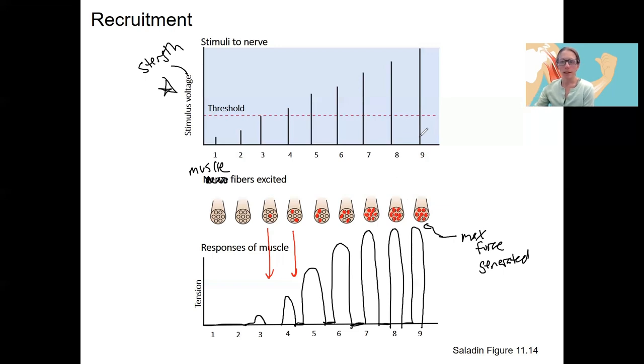This here shows recruitment with increasing stimulus strength up until a point when all the motor units are recruited. So again, motor units are useful for preventing fatigue due to that cycling and also useful for increasing the amount of force as needed due to recruitment.